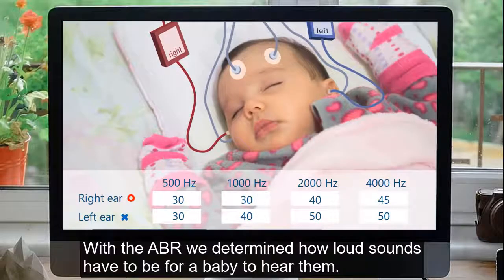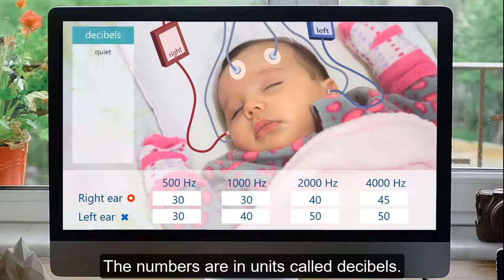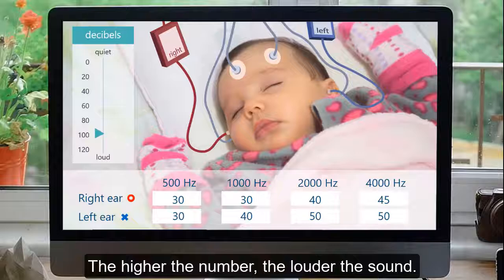With the ABR, we determined how loud sounds have to be for a baby to hear them. The numbers are in units called decibels. The higher the number, the louder the sound.